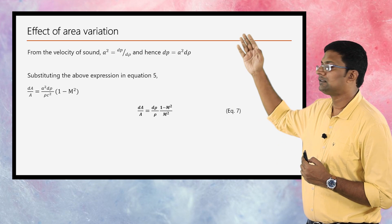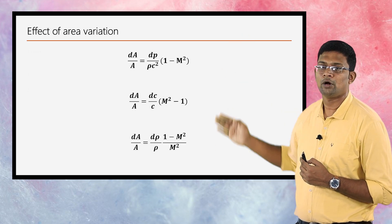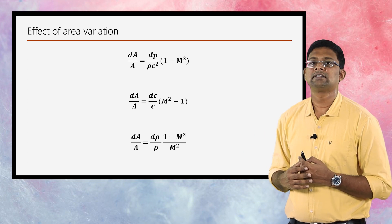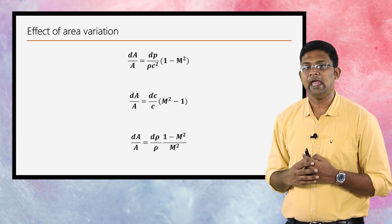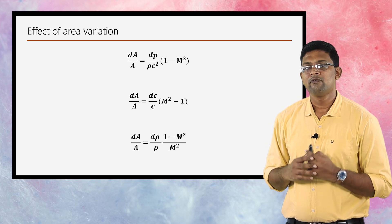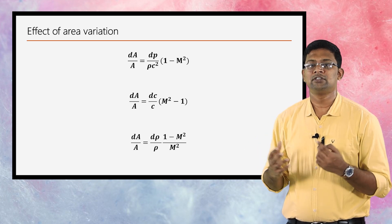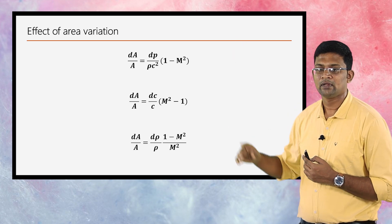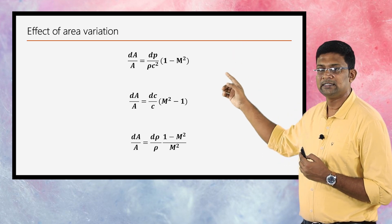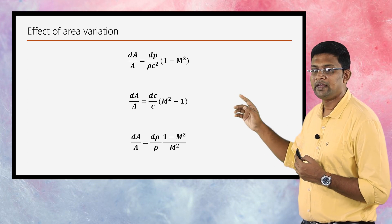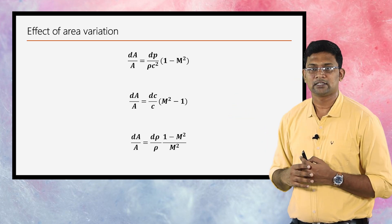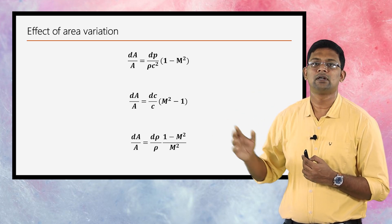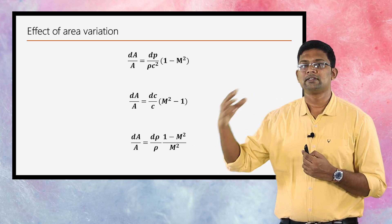So these are the three outputs obtained from this derivation. As we can see, all three expressions have dA/A on the left-hand side, and they relate the variation in area with: variation in pressure dP (first expression), variation in velocity dC (second expression), and variation in density dρ (third expression). The first two expressions are particularly important for our next concepts.